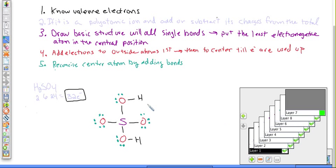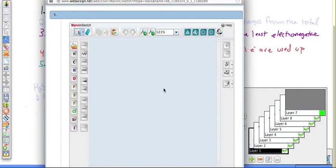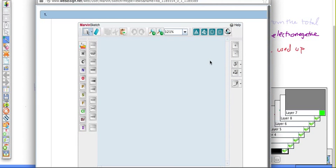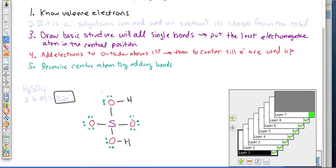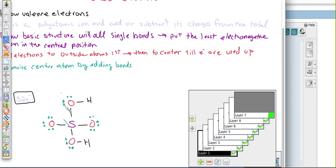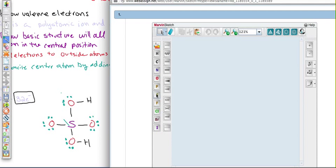We have all of our electrons accounted for, and everybody has a full octet. So we did have a rule five here. And so reconcile the center atom by adding bonds. So if, for example, the center atom did not have eight electrons, what I would do would be, I would take like one of these lone pairs up here and just turn it into a bond so that we had eight. But it turned out that the sulfur had eight electrons just with the single bond. So this one does not have any double bonds.